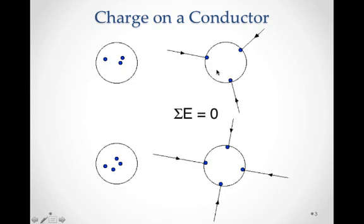What happens if we put another negative charge in here? These charges are still free to move within the conductor. If we place a fourth negative charge within the system, these charges would move away from each other and redistribute again so that they cancel each other's electric fields. As we continue to put charge on or take charge off this copper disc, the charges redistribute themselves on the surface, causing the net electric field within the conducting disc to equal zero.